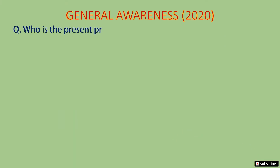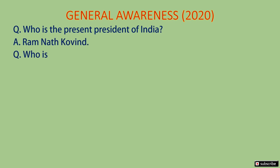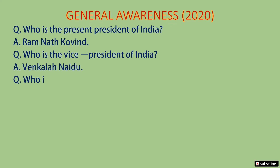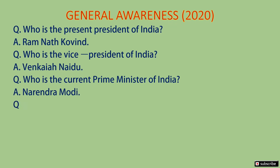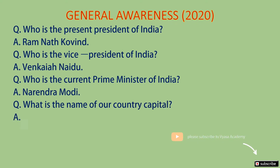Who is the present president of India? And the answer is Ramnath Kovind. And the second question is, who is the vice president of India? And the answer is Venkaya Naidu. And the third question is, who is the current prime minister of India? And the answer is Narendra Modi. And the fourth question is, what is the name of the country's capital? It's New Delhi.